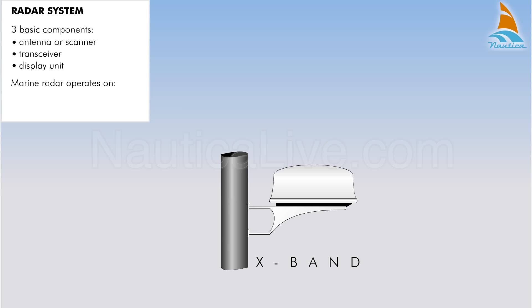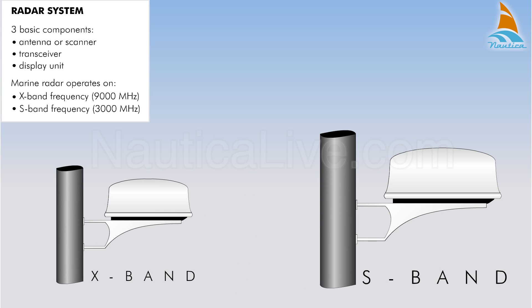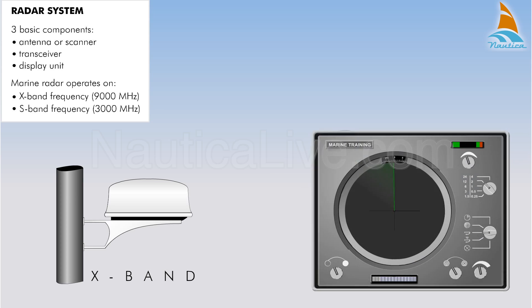Marine radars operate either on the X-band frequency, 9000 MHz, or on the S-band frequency, 3000 MHz. A shorter wavelength allows the use of smaller antennas. Therefore, on most small boats, the radar used is in the X-band frequency.